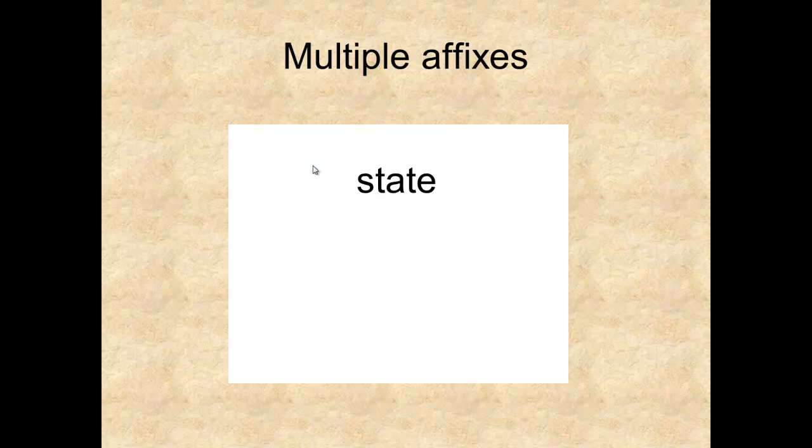Words in English can be formed from the addition of many affixes. Let's look at a couple of examples. The word "state" is a noun meaning condition or position — think of "state of health" or "status." By adding the prefix "in-," we change the noun "state" into the verb "instate," which means to place in a certain position. This is clearly a derivational morpheme since it changed the grammatical class of the root.